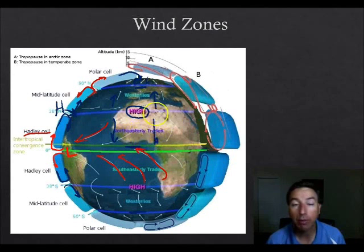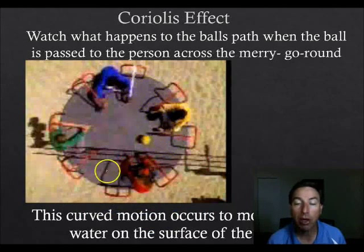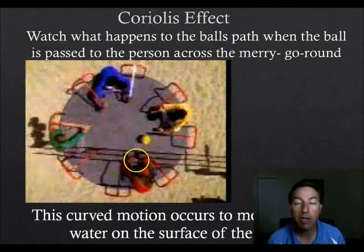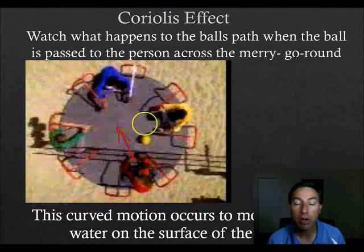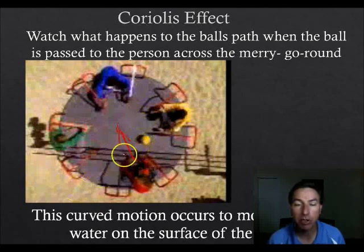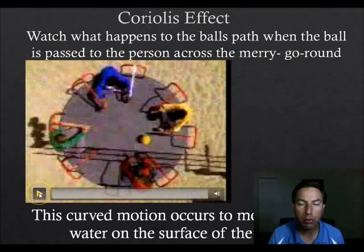The next slide is a demonstration of the Coriolis effect using a merry-go-round. We have a group of students on a merry-go-round passing a ball back and forth, trying to pass it straight to each other. Watch the motion of the ball — there will be several different views and I'll play it twice so you can get a good handle on it.